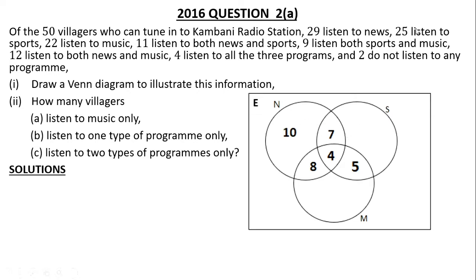You find that you get 10 who listen to news only. Then we have 25 who listen to sports, so add 7 plus 4 plus 5 and subtract from 25 — you get 9 who listen to sports only. Then we have 22 who listen to music, so add 8 plus 4 plus 5 and subtract from 22 — you get 5 who listen to music only. The question says 2 do not listen to any program, so those 2 are outside the sets — they are the complement.